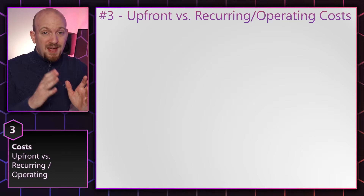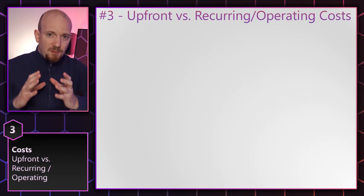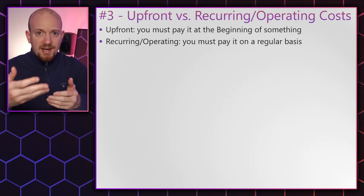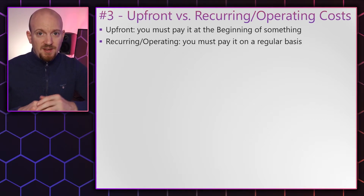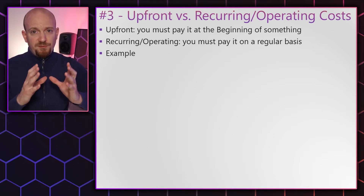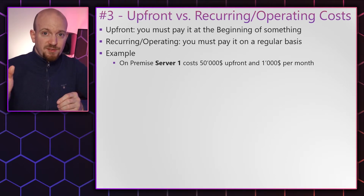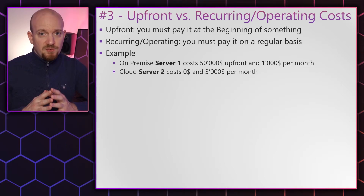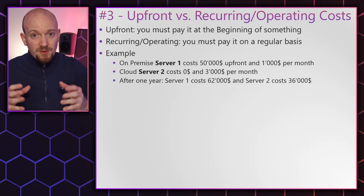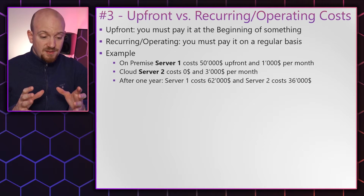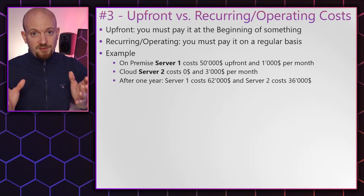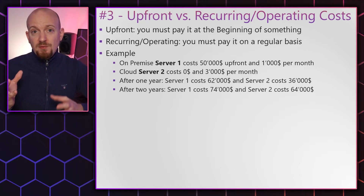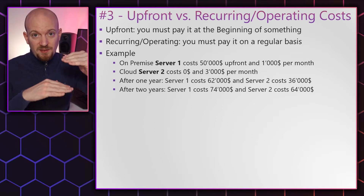Now let's talk about upfront and operating costs. Upfront costs are costs you pay at the beginning of a project or when you buy a system. Recurring or operating costs you must pay on a regular basis. For example, an on-premise server costs $50,000 upfront and $1,000 per month to operate. A cloud server costs $0 upfront but $3,000 per month. After one year the first server costs $62,000 and the second costs $36,000. You see the difference gets smaller over time.